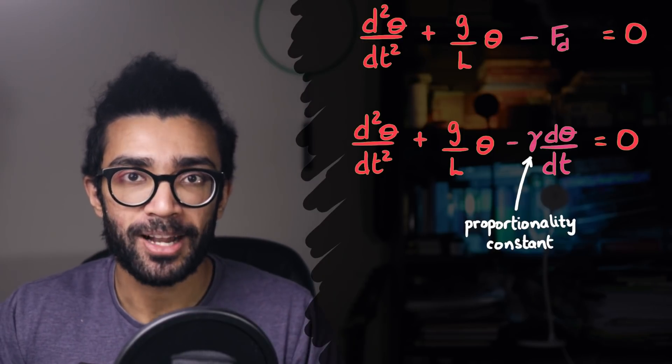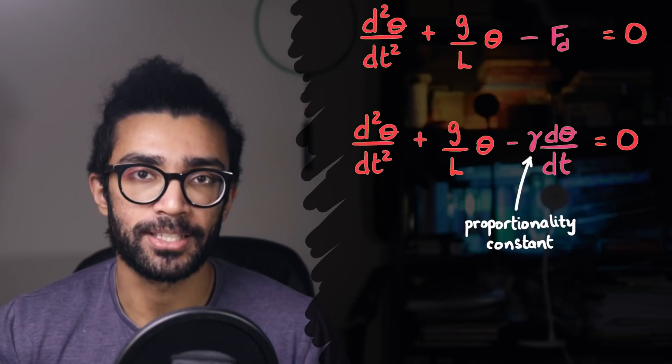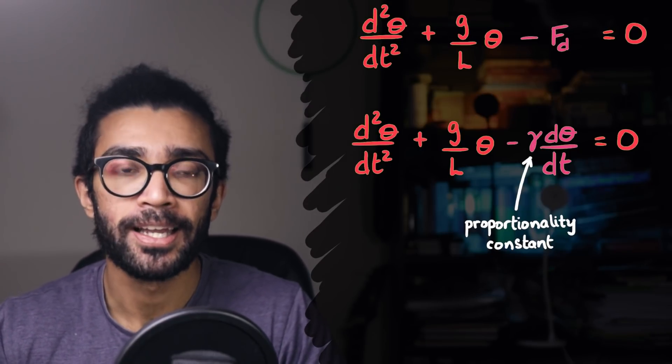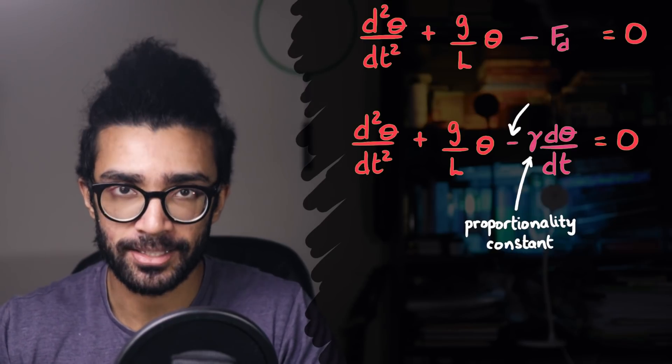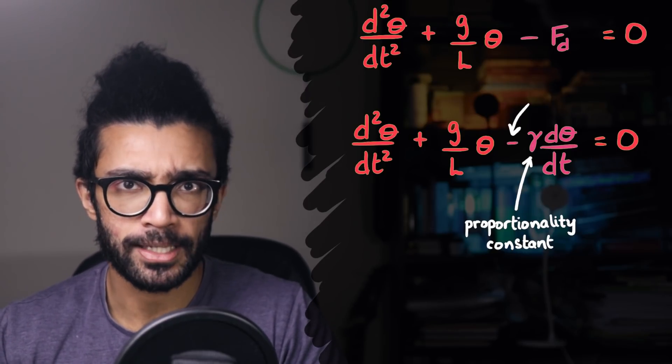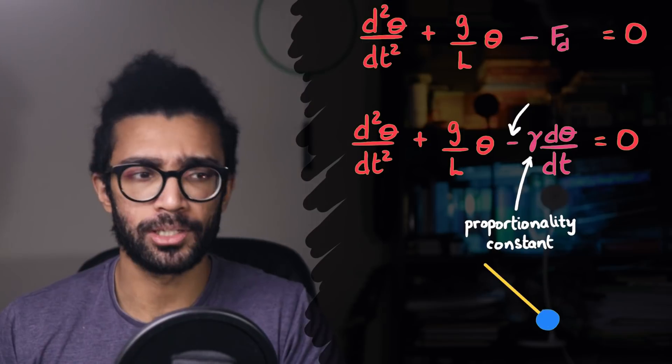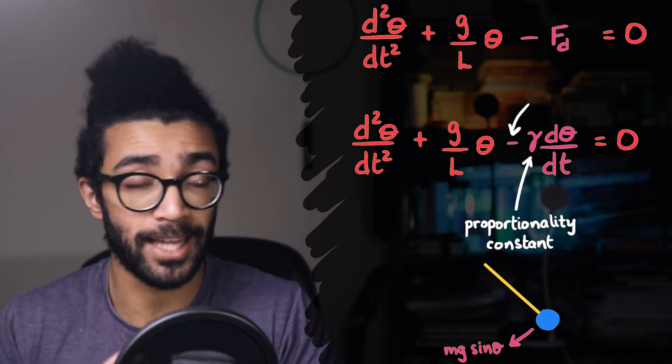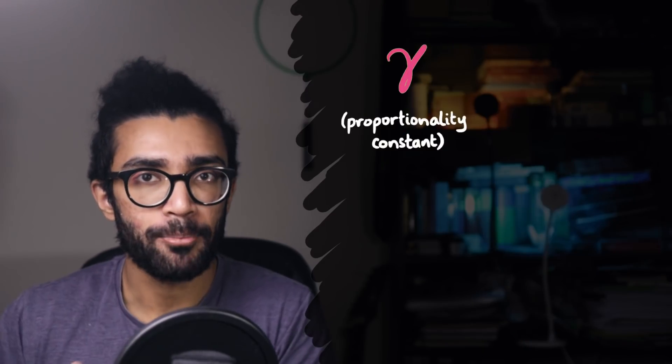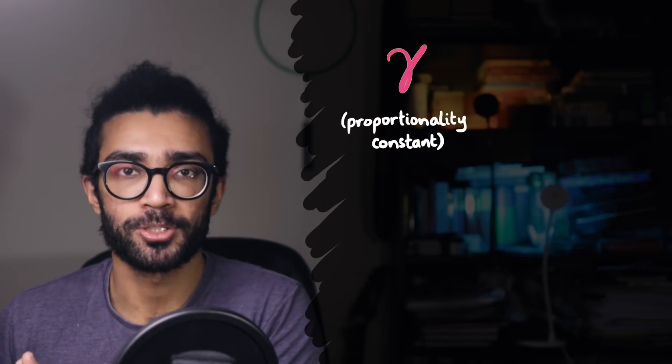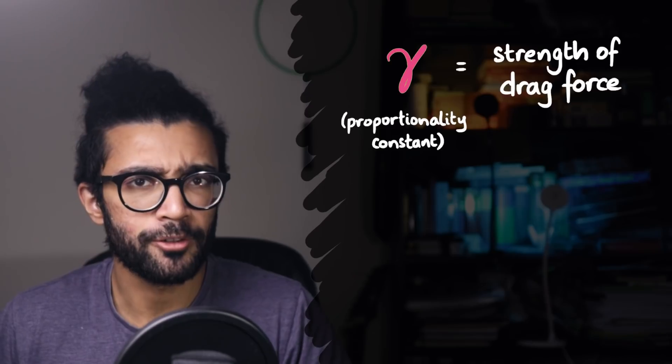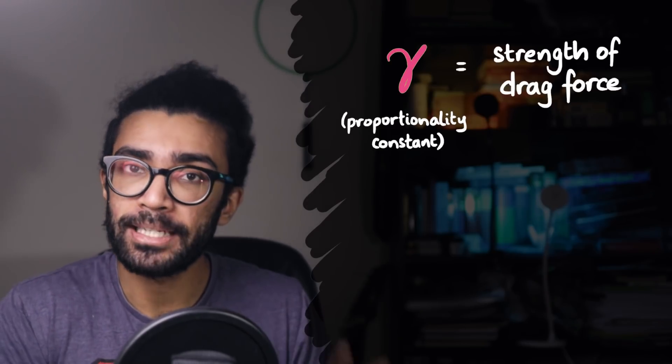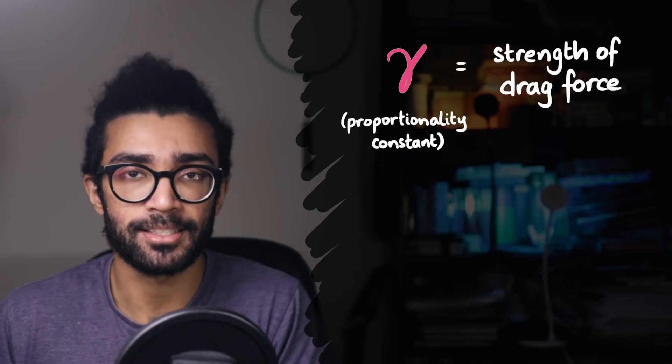Firstly, the drag force is acting in the opposite direction to the gravitational force, or at least the component of gravitational force in the theta direction, and that is signified by the negative sign. This makes sense, because if the gravitational force is pulling our pendulum this way, then the drag force is going to be opposing that, acting in that direction. Secondly, gamma, which we've said is the constant of proportionality, is actually a measure of the strength of the drag force created by the particular medium that we're considering. In this case, that's air.